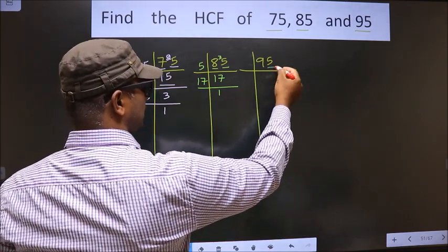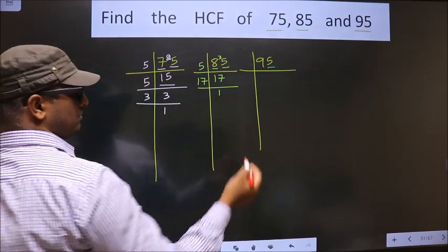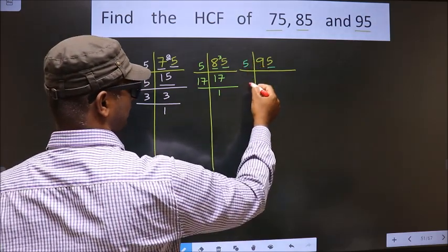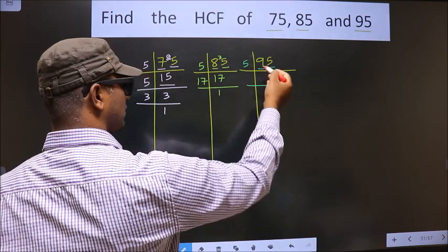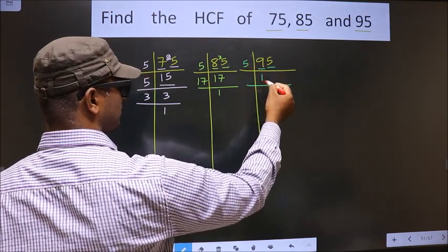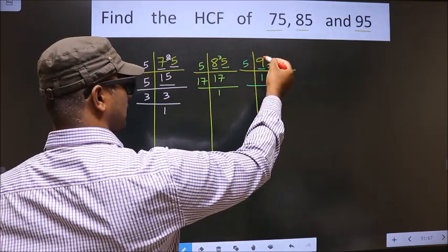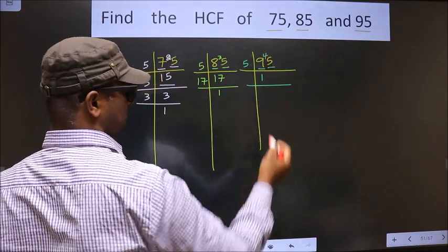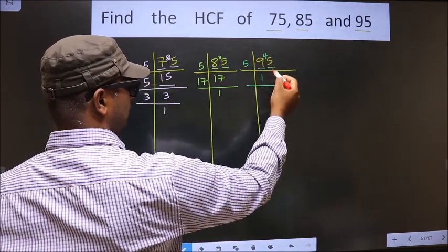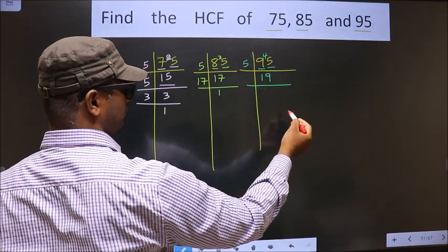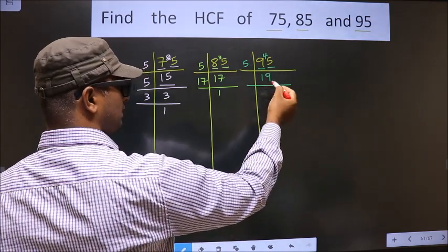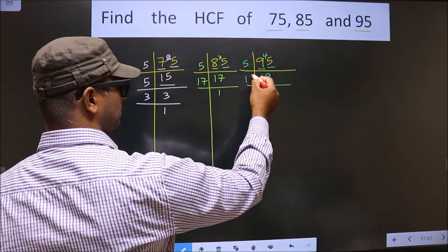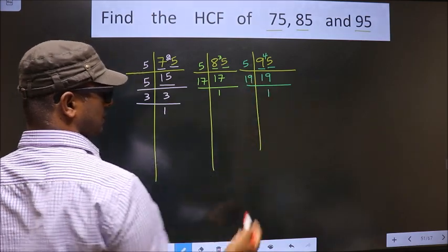Now for this number, last digit is 5, so we take 5 here. First number is 9. A number close to 9 in five table is 5 once 5. 9 minus 5 is 4, carried forward making it 45. 5 times 9 is 45. Now here we have 19. 19 is a prime number, so we take 19 once 19.